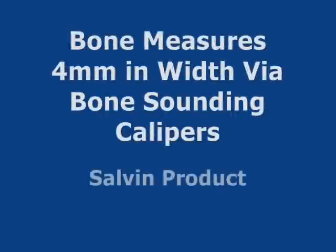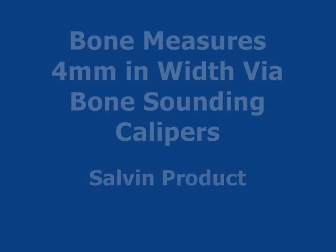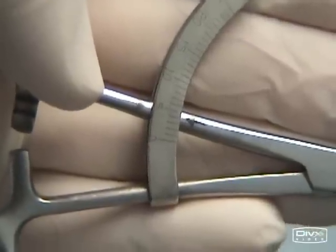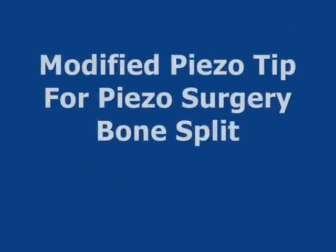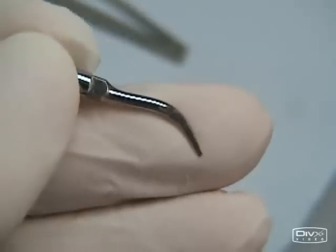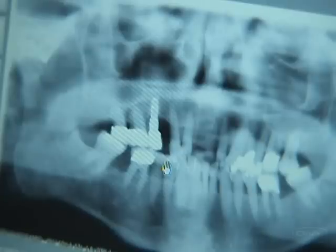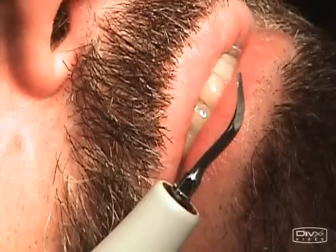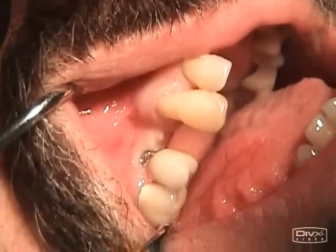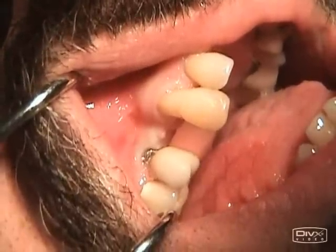This is a case with a very narrow ridge that measures just 4 millimeters via bone-sounding calipers. We used a modified PISO tip so we could split it with a PISO surgery unit. There's the tip. Here's a Panorex of the case.